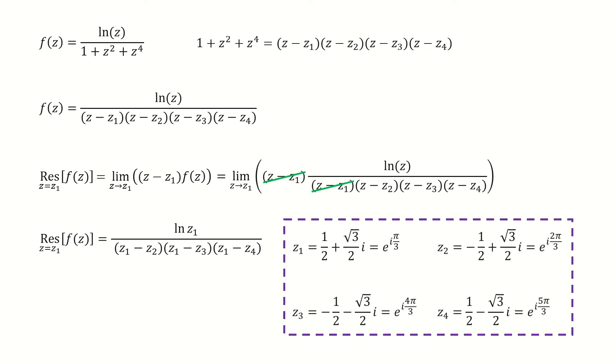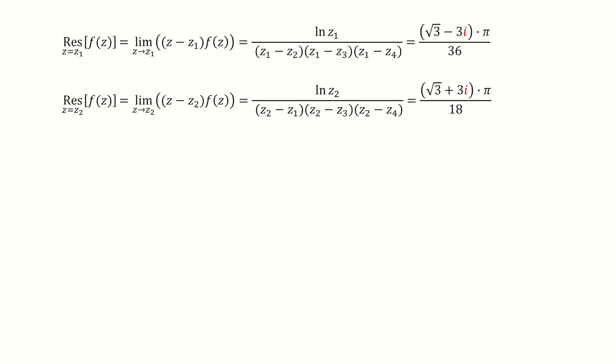Record the four roots. After plugging in the four roots, we do some algebra to simplify it, so we got the residue for z1. For the residue on z2, we can calculate it similarly. Here is the result for these two residues.